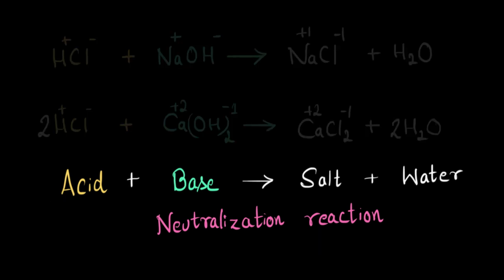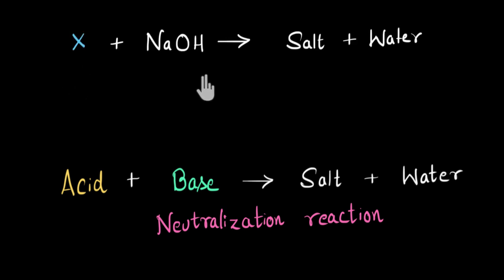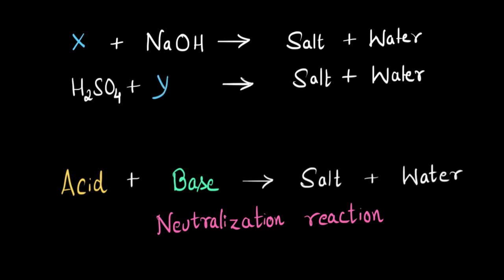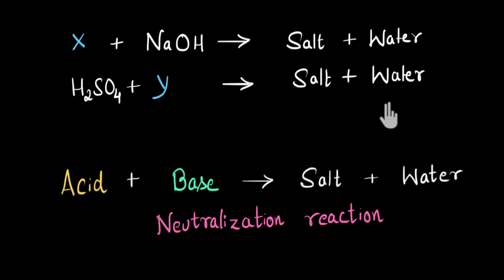Here's a question: compound X reacts with NaOH to give a salt and water — can you say anything about X? Since NaOH is a base and it gives salt and water, X must be an acid. Similarly, H₂SO₄ is reacting with compound Y to give salt and water — since H₂SO₄ is an acid, Y can only be a base. So something that reacts with an acid to give salt and water is a base, and something that reacts with a base to give salt and water is an acid.